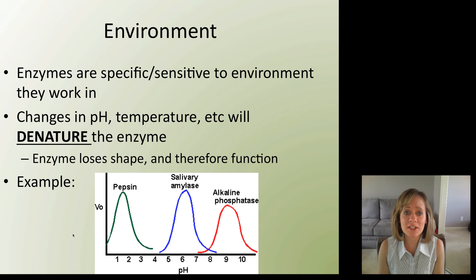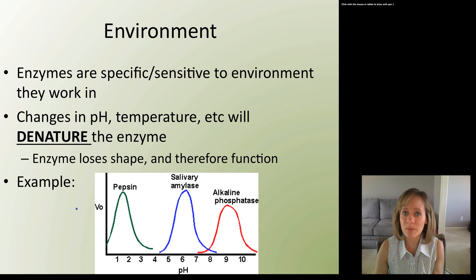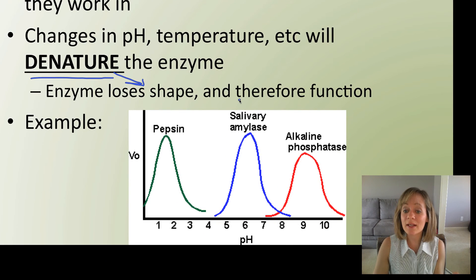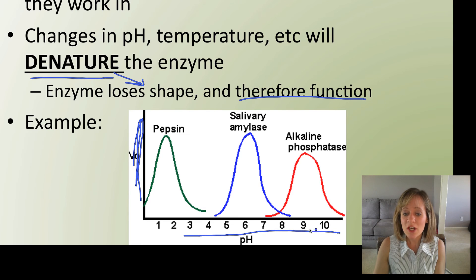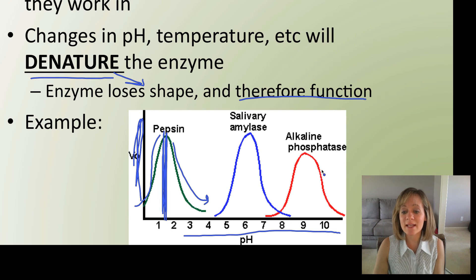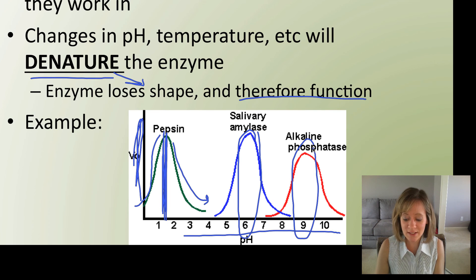Another factor affecting enzyme function is the environment. Enzymes are sensitive to changes in pH or temperature, which could cause denaturation - meaning the enzyme loses its shape and therefore loses its function. For example, pepsin, a digestive enzyme, works best at a low pH. If the pH goes too low or too high, its function decreases. Salivary amylase and alkaline phosphatase similarly have very narrow pH ranges where they work best, demonstrating how sensitive enzymes are to their environment.